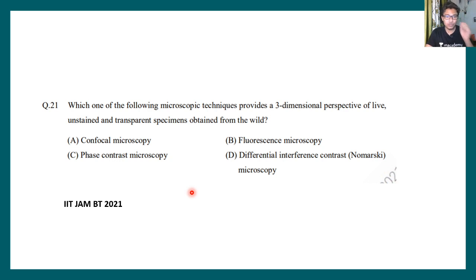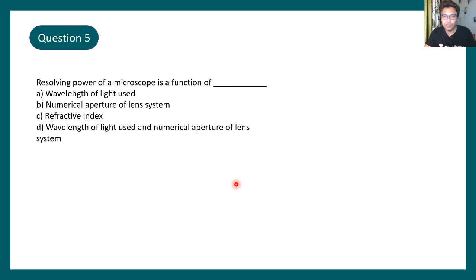If you want to learn more about phase contrast microscopy, you can watch my Unacademy course. Now in 2021 IIT JAM Biotechnology they asked a question: which one of the following microscopy techniques provides a three-dimensional perspective of live unstained transparent specimen obtained from wild? Now this particular answer would be very similar to the previous question but this one is differential interference contrast microscopy. Both differential interference contrast and phase contrast microscopy can be used to visualize a specimen and it can give you high contrast, but phase contrast microscopy and differential interference contrast microscopy's principle of working is different. If you want to learn more about the principles, you have to come to the Unacademy class and the link is given in the description.